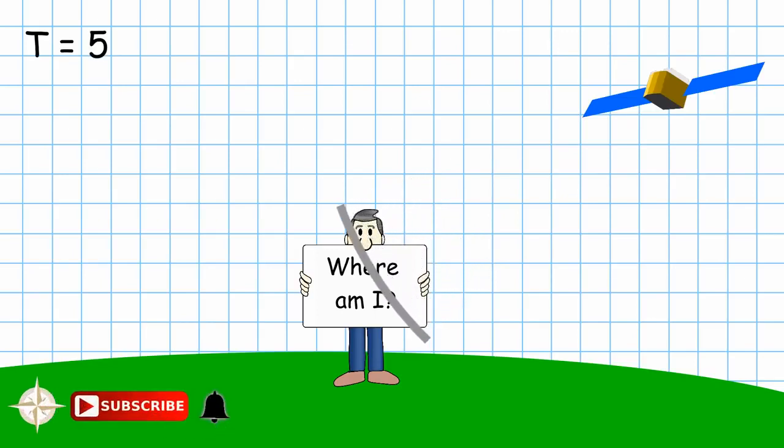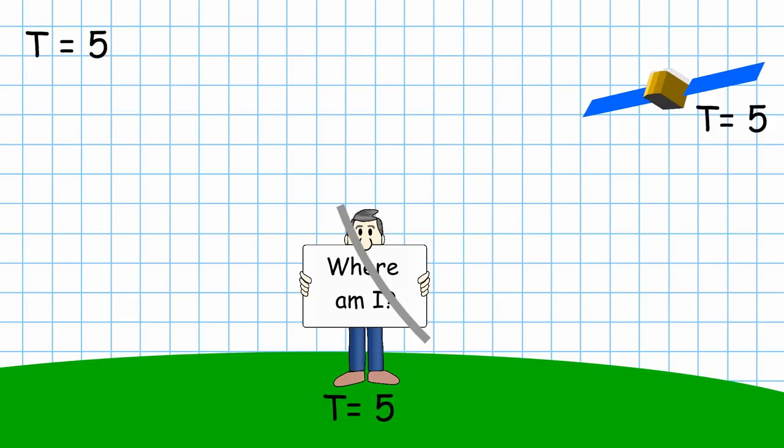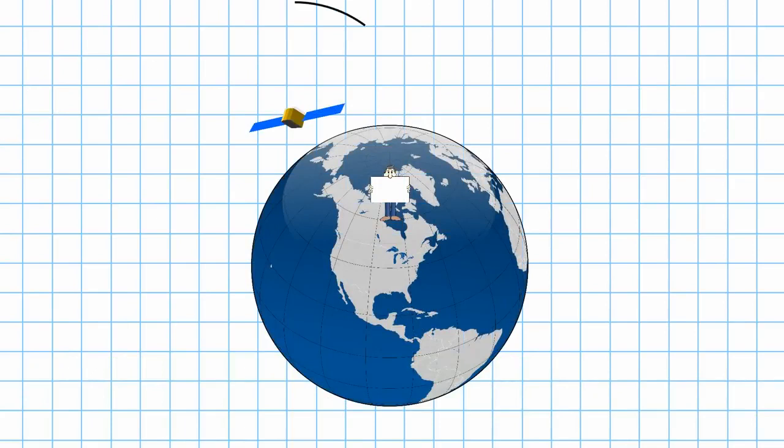If the time on the receiver and the time on the satellite were perfectly in sync, the receiver could easily calculate the precise distance to the satellite using the equation distance equals speed times time. Time was measured at 5, and the speed is the speed of light. With that distance, it can draw a ring around the satellite and know that it is somewhere along that ring.